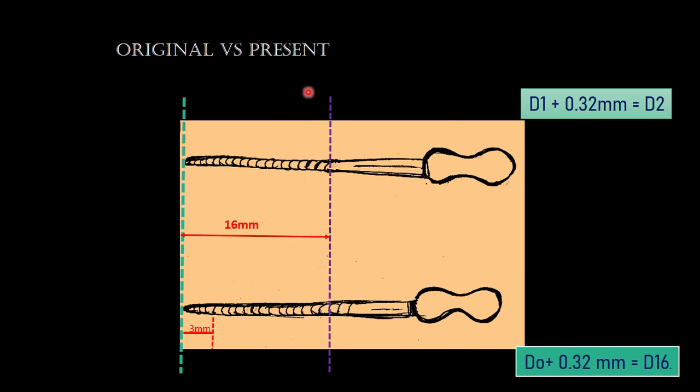To summarize, original versus present: previously we used to have D1 at the tip that depicts the diameter of the instrument at the tip, and from 16 mm to that we have D2. But now since this D1 has been changed to D0, 3 mm from D0 we have D3, and 16 mm from D0 we have D16. D1 plus 0.32 mm will give you D2, and D0 plus 0.32 mm will give you D16.